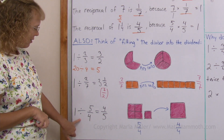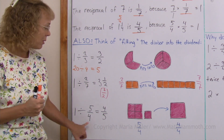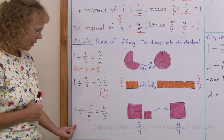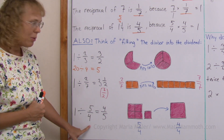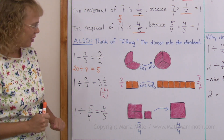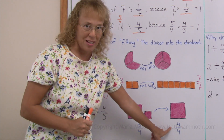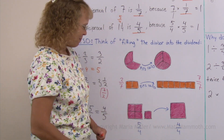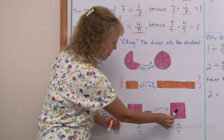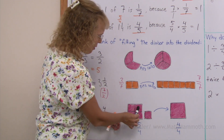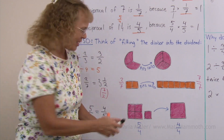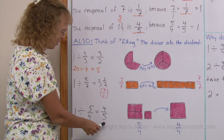Last one: 1 divided by 5 fourths. The answer is 4 fifths, because these two are reciprocal numbers — if you multiply them, you get 1. In the picture, how many times does 5 fourths fit into 1? Not even once, of course. Here's my 5 fourths, here's my 1. It won't fit there, but a certain part of it fits. You can think these 4 little parts would fit there — and if there are 5 parts, then these 4 little parts are 4 fifths of this thing. So, 4 fifths is the answer.